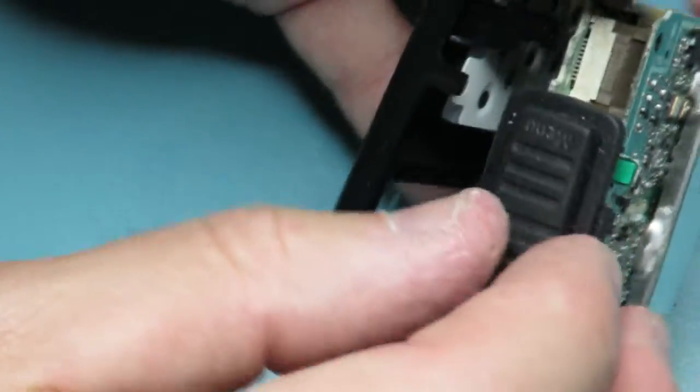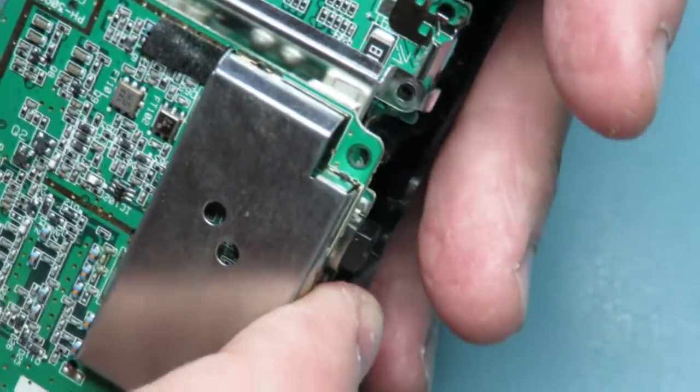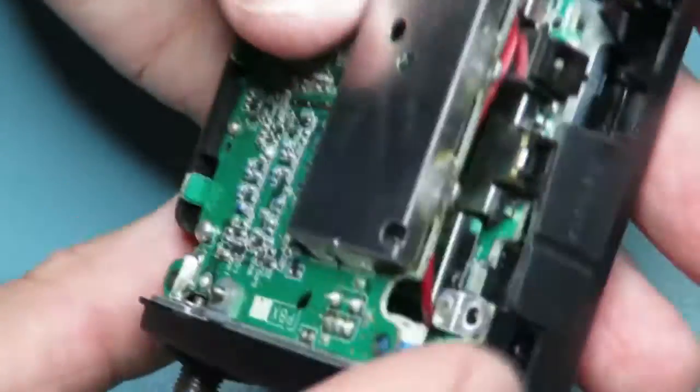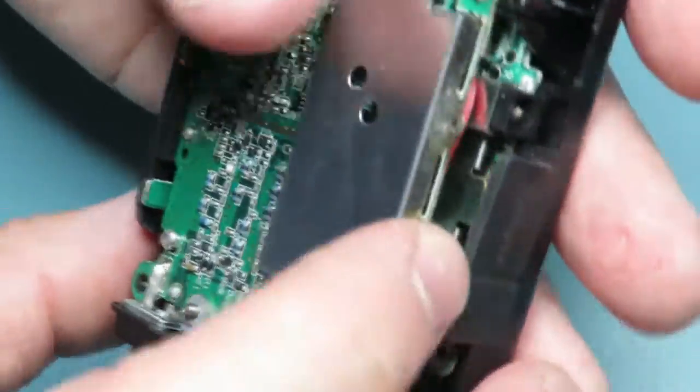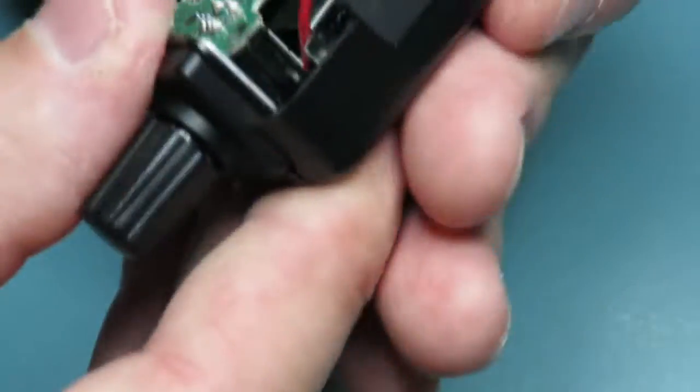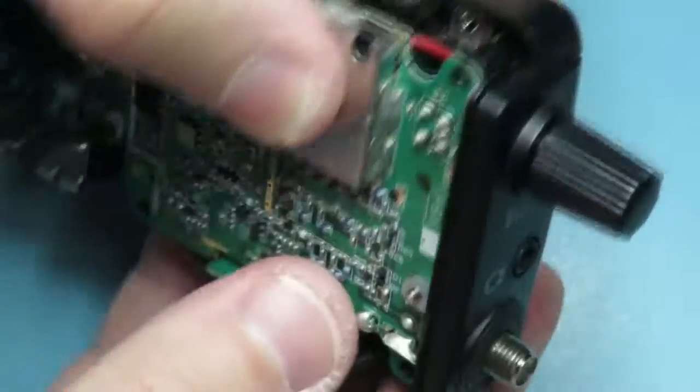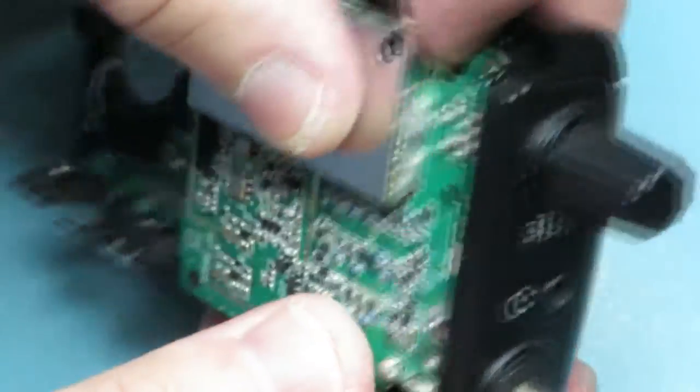We'll put the rubber button connector back on. Refit it back to the case. I'm just making sure it fits neatly in there, it's all correctly aligned. Do take your time with this. There's no point, obviously if it doesn't fit, if it doesn't go in easily, then there's something wrong.